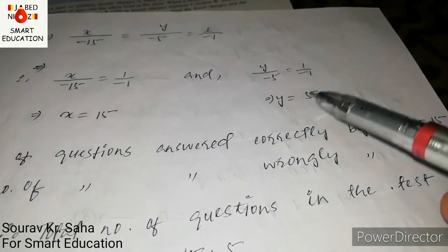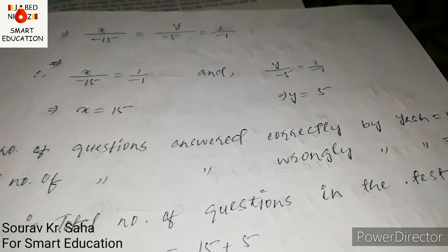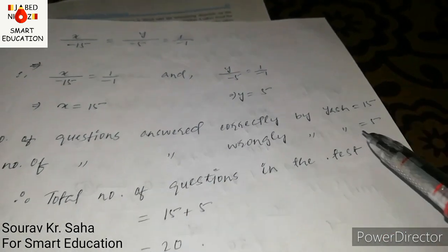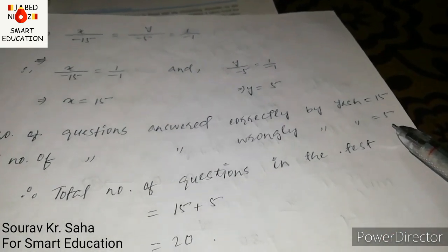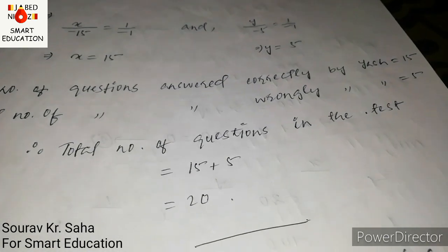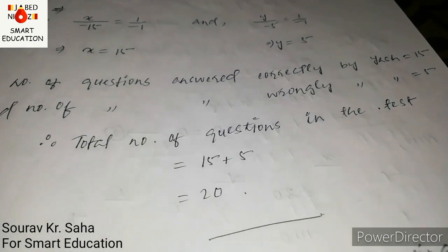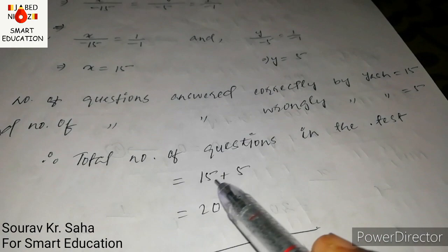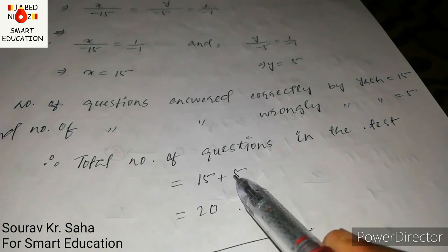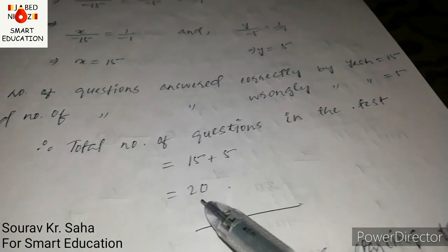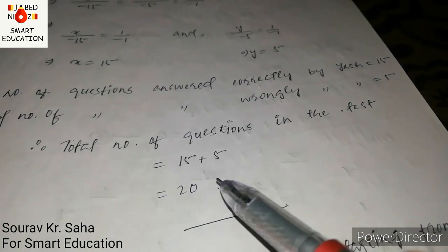From x by −15 equals 1 by −1, x equals 15. From y by −5 equals 1 by −1, y equals 5. So correct answers are 15 and wrong answers are 5. The total number of questions is 15 plus 5 equals 20 questions.